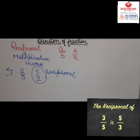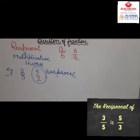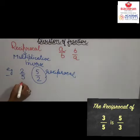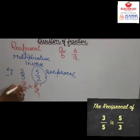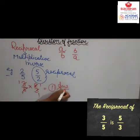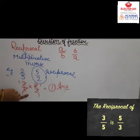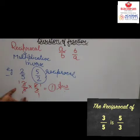When two fractions are such that their product is equal to 1, each fraction is called the multiplicative inverse of the other. For example, 3 upon 8 multiplied by 8 upon 3 — the 8s and 3s cancel — giving us 1. So 8 upon 3 is the reciprocal of 3 upon 8.